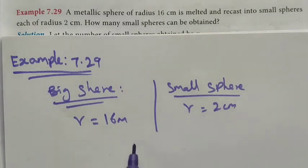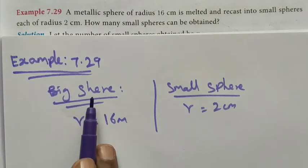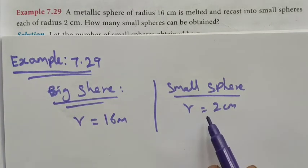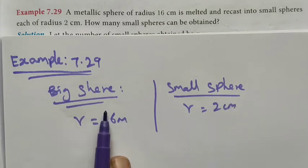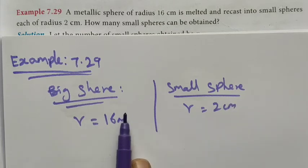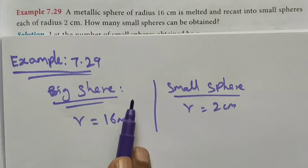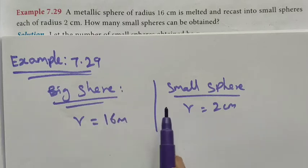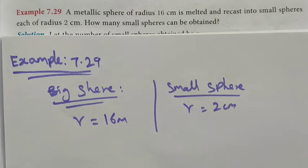This object is totally destroyed and converted into small ones. The total volume remains unchanged — this total object is converted to a small object. So the volume of the bigger sphere is equal to the volume of the smaller sphere multiplied by n.